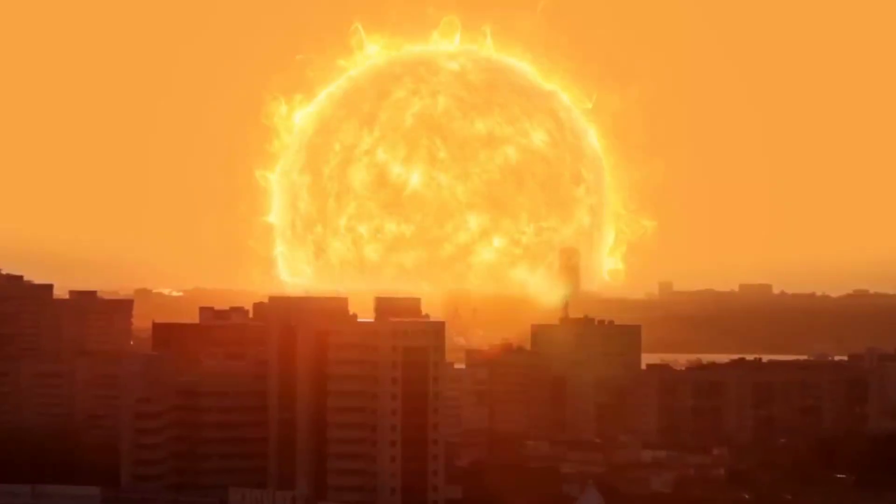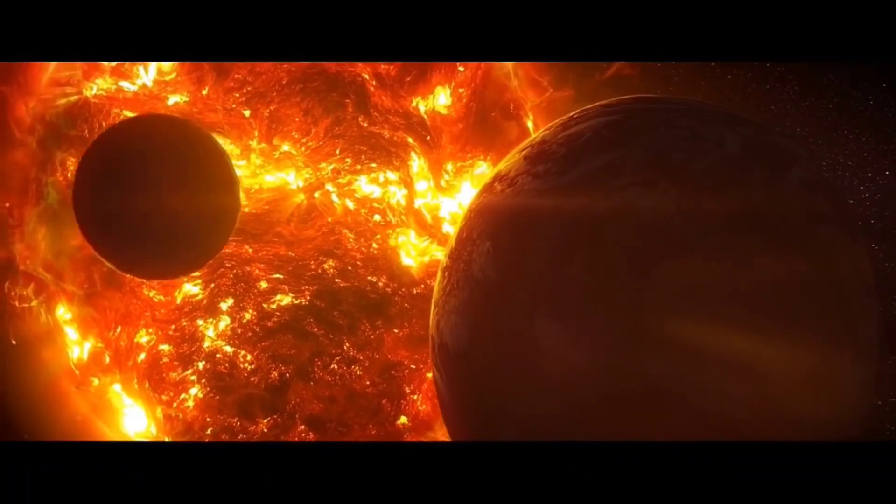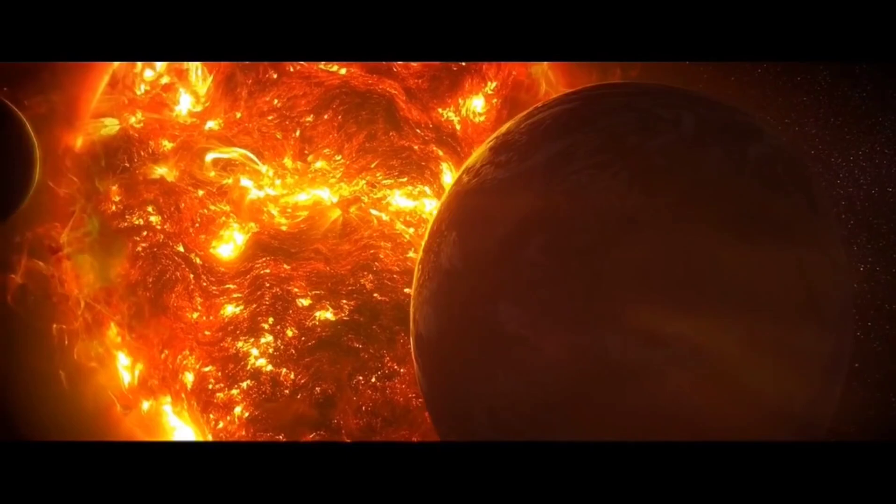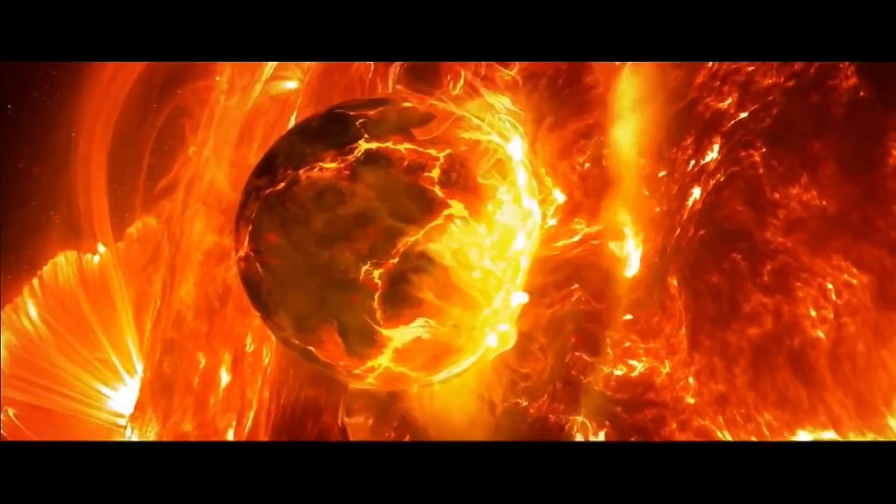In about 5 billion years, the Sun will enter the Red Giant phase, a stage when it will expand and swell, reaching up to 250 times its current size. The Sun will engulf the inner planets, including Mercury, Venus, and possibly Earth, destroying them completely.